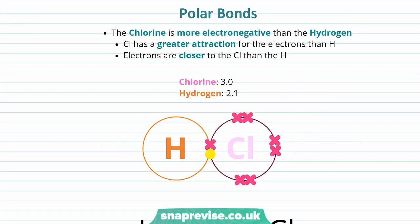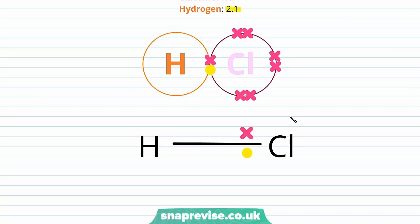Polar bonds occur when one atom in a bond is more electronegative than another. Here we have a bond between hydrogen and chlorine with electronegativity values from Pauling's scale - chlorine has a value of 3.0 whereas hydrogen has a value of 2.1. Chlorine is more electronegative than hydrogen, so the chlorine has a greater attraction for the electrons in the bond, and the shared pair of electrons is held closer to the chlorine than the hydrogen.